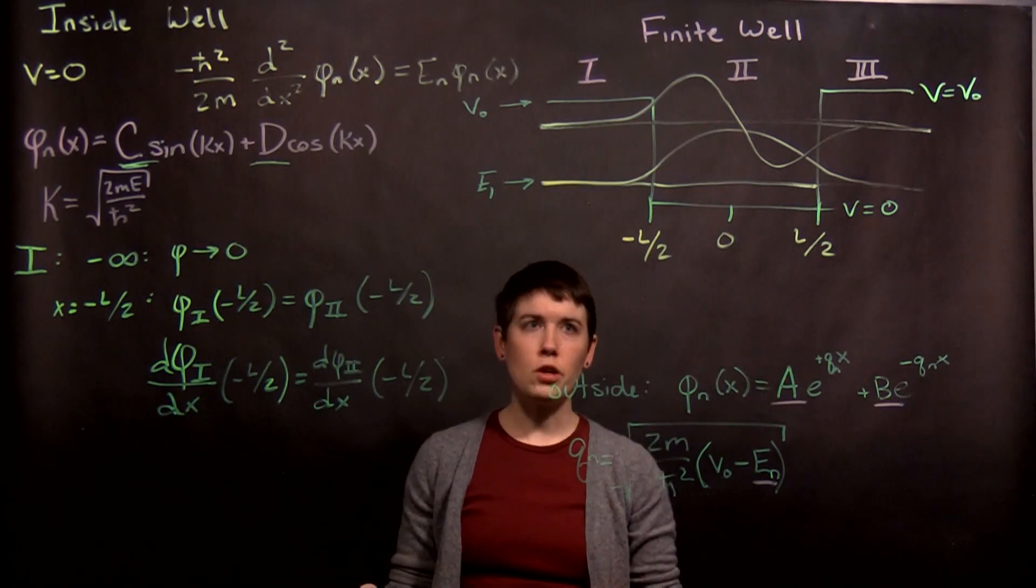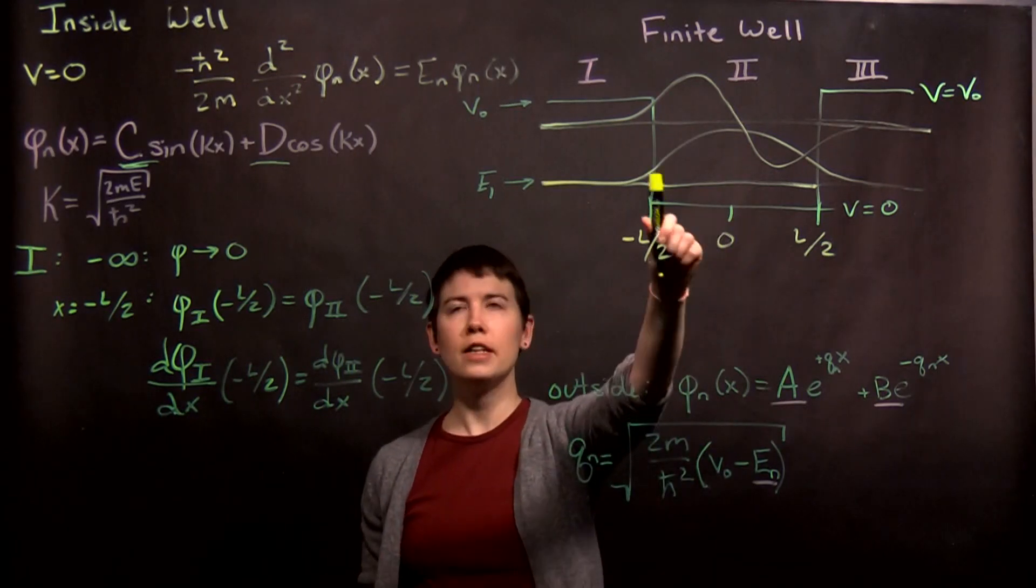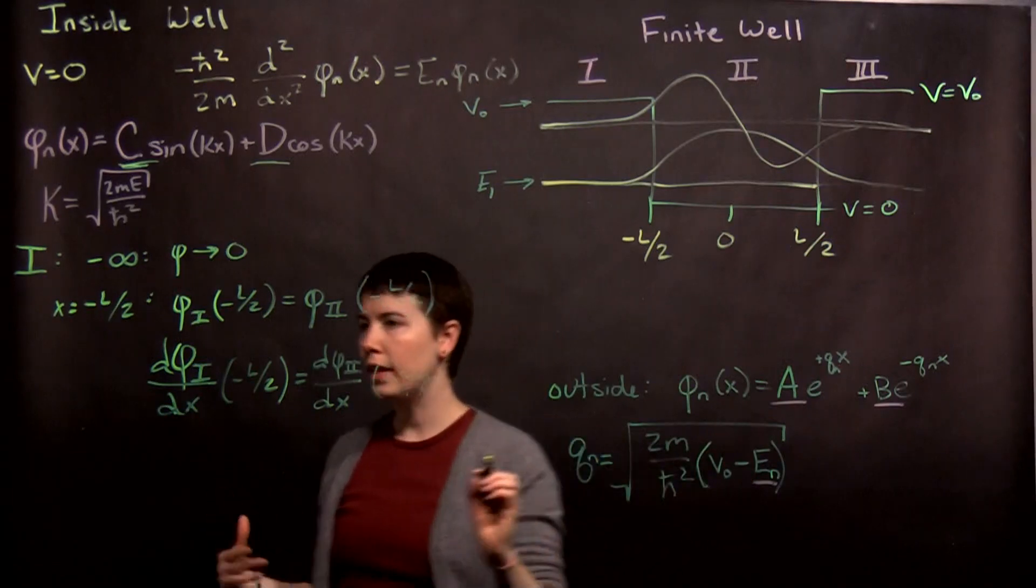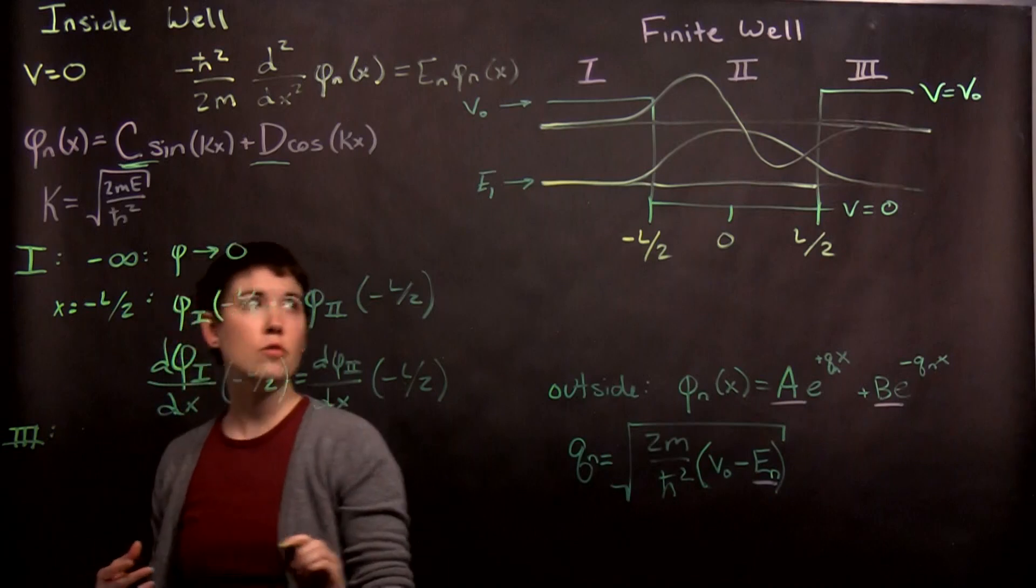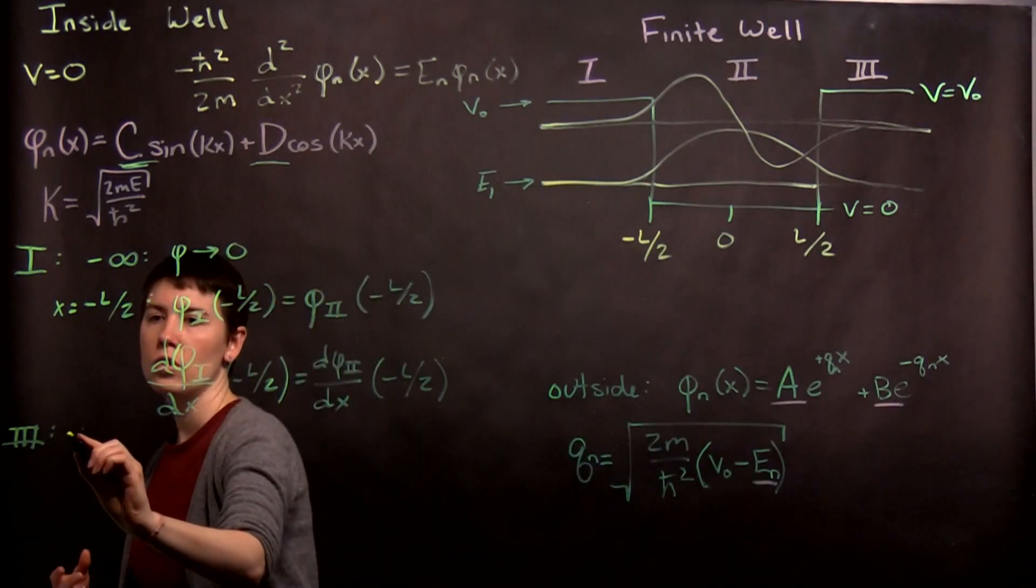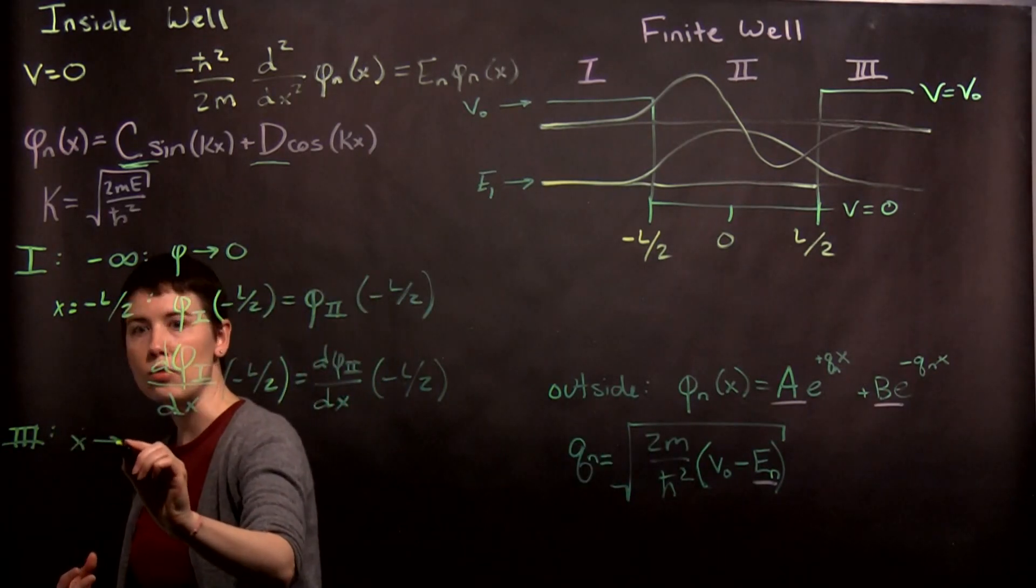So now, we could look at that second region, and again notice that I have this boundary. Let's actually look at the third region. So, at the third region, we have x, the limit as x goes to a positive infinity.